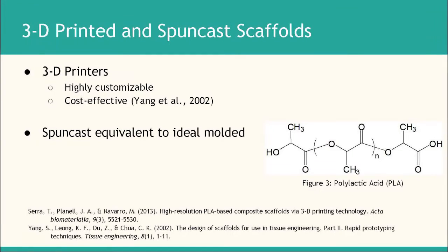Dexamethasone is a type of glucocorticoid that is known to induce osteogenic differentiation. Previous studies have shown that the use of dexamethasone in coordination with dental pulp stem cells creates the formation of nodules, which are early signs of differentiation. Our study specifically focuses on the conjunction between 3D printers and dental pulp stem cells. The polymer that we chose for our 3D printer was PLA, a biodegradable polymer that has been approved by the FDA for use in medical applications and is highly cost-effective and customizable.